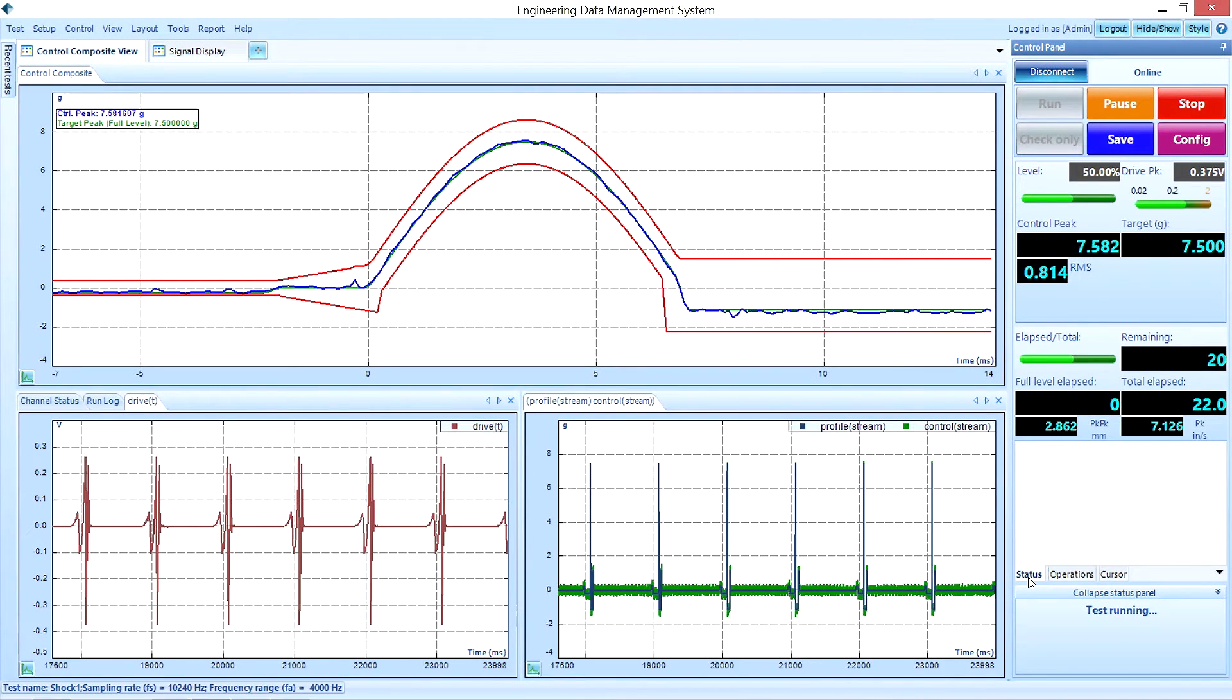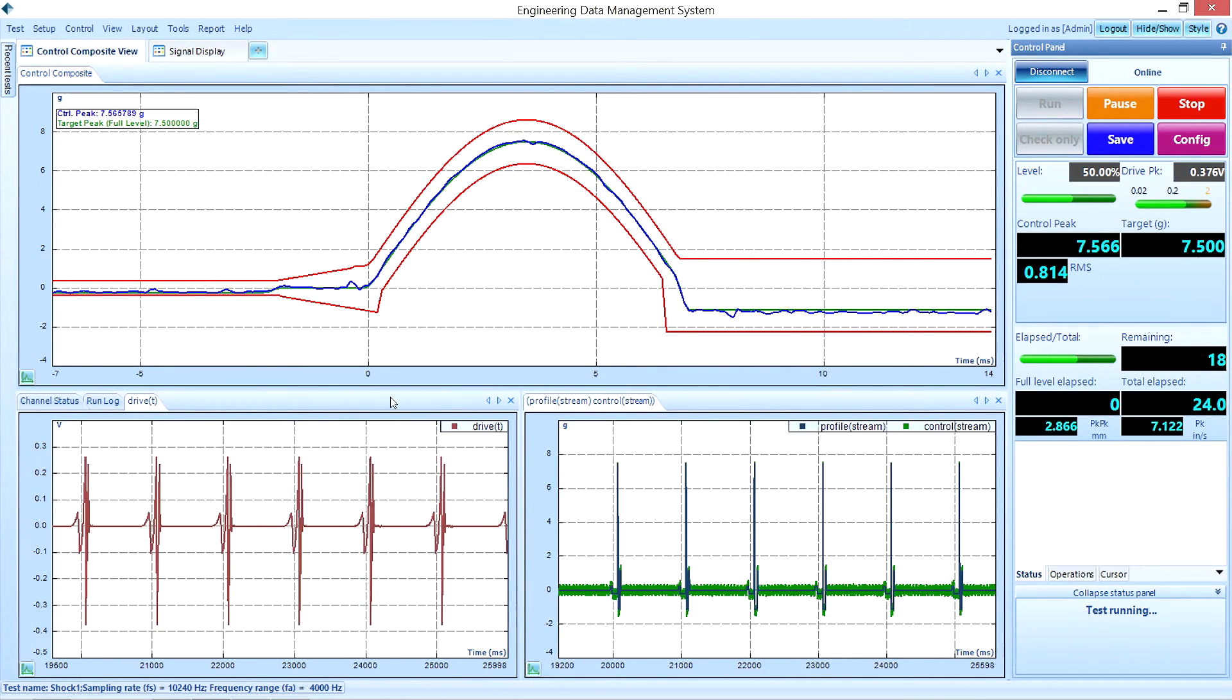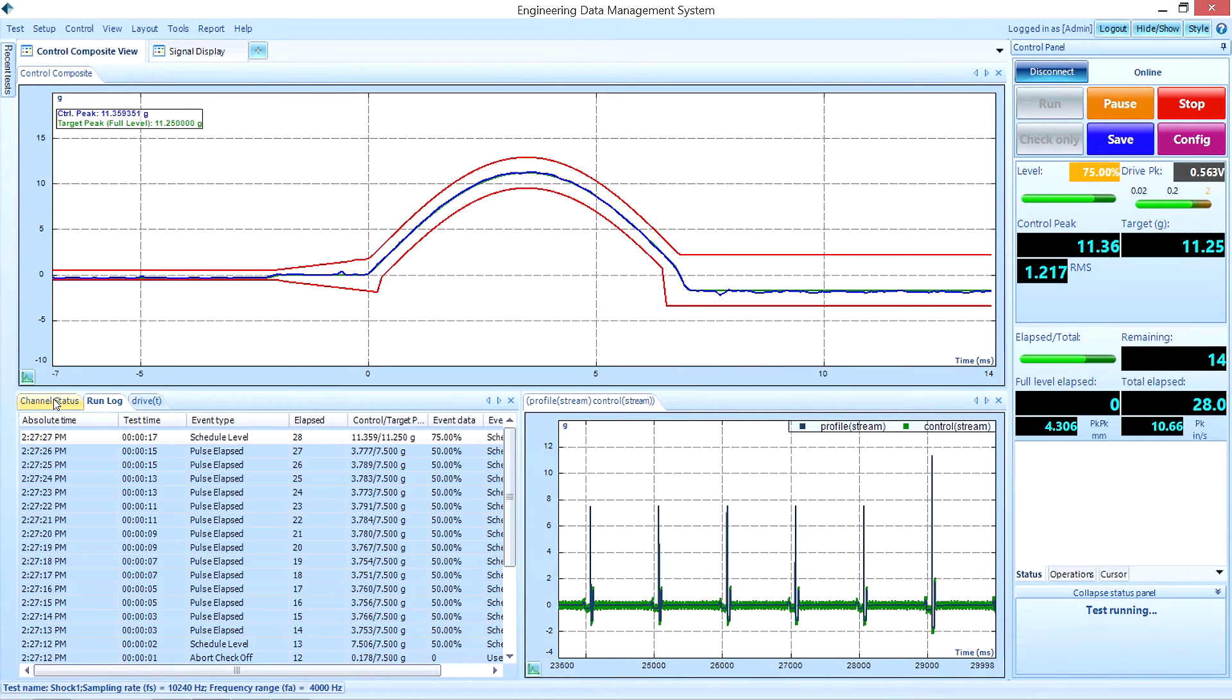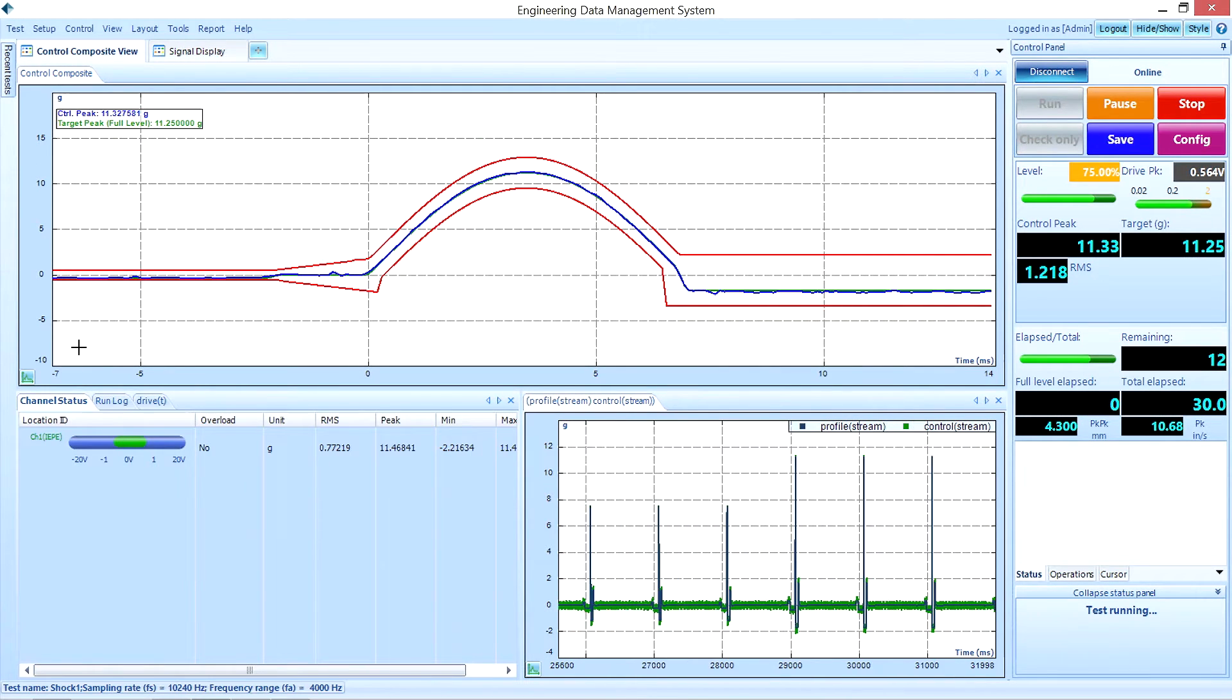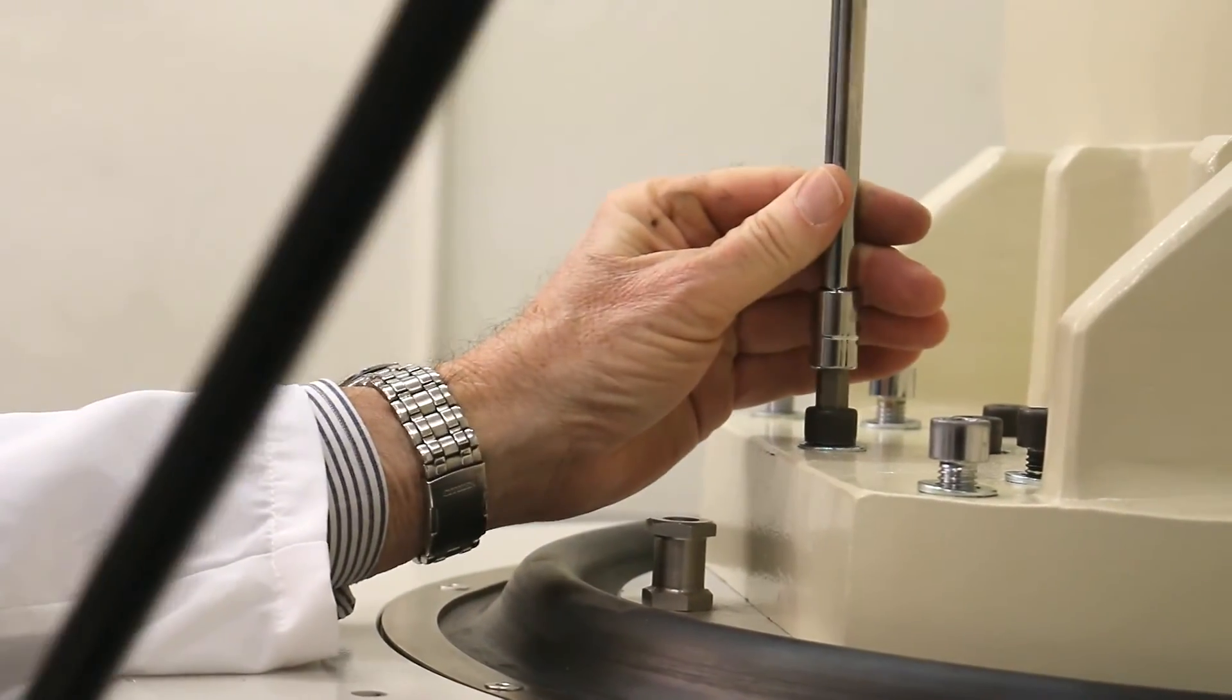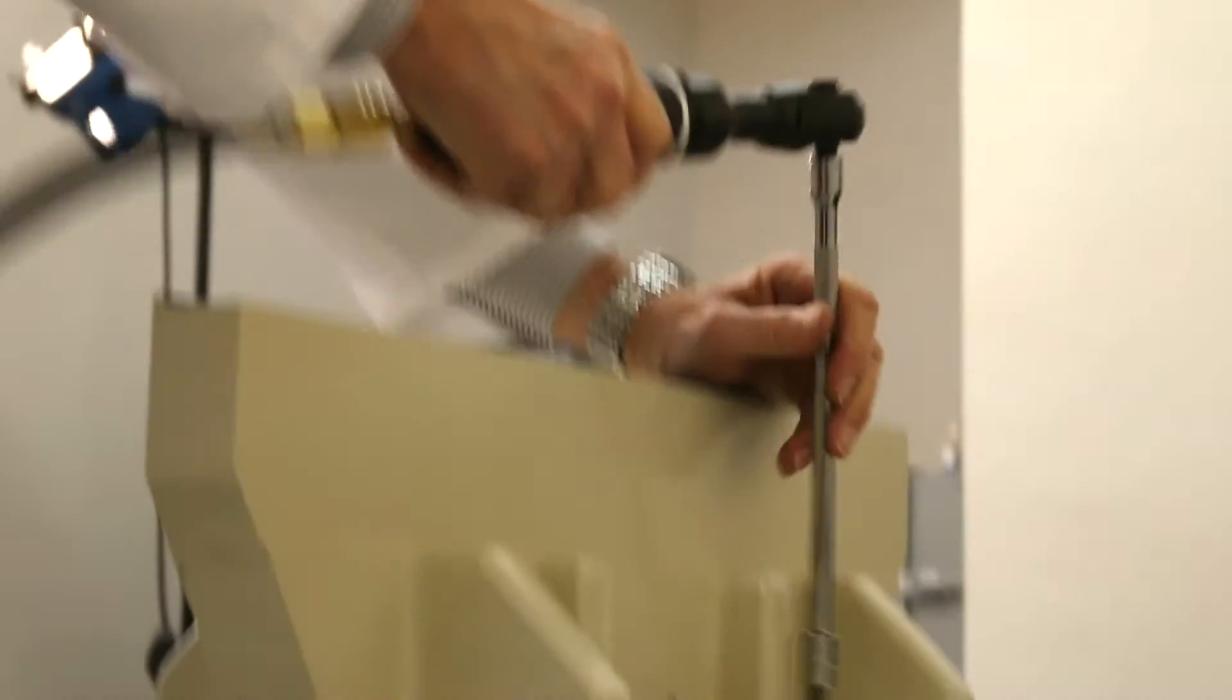Here is the control signal. It is the acceleration signal measured on the testing article. The closer the control signal can match the defined pulses, the better. With this test, you can see the control signal matches the target profile very well.